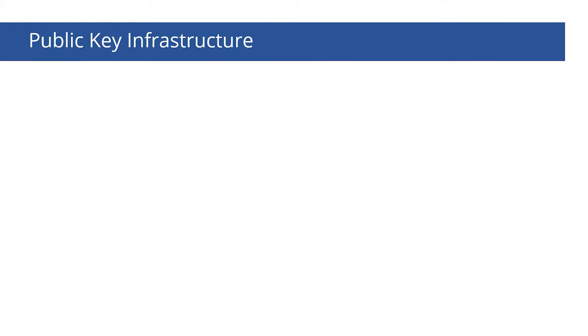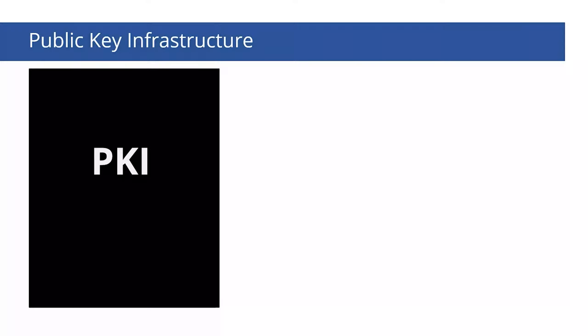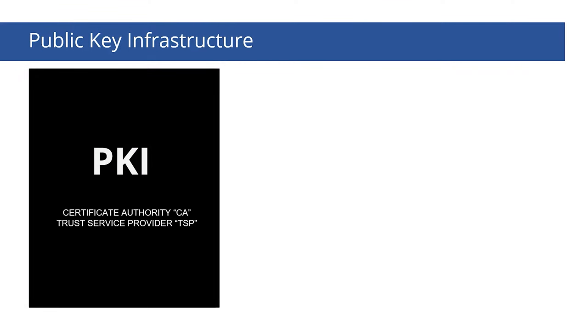Now let's get back to a broader application of digital signatures. Practically, we don't use such a scheme to sign documents because we don't know if the person lost their private key or even if it was stolen. To address this problem, people invented a public key infrastructure. It is a protocol that involves trusted third parties such as certificate authorities, or trust service providers — which is the same but usually called so in the EU.